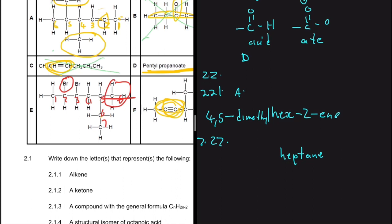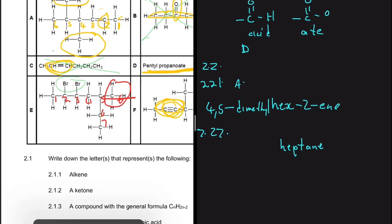If a situation arises where you reach bromo from one side and methyl from the other at the same position, you check alphabetical order — bromo comes before methyl alphabetically, so you take bromo. But here, bromo is on carbon 2 from the left and methyl is on carbon 3 from the right, so we take bromo automatically.